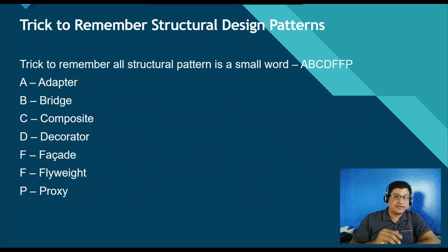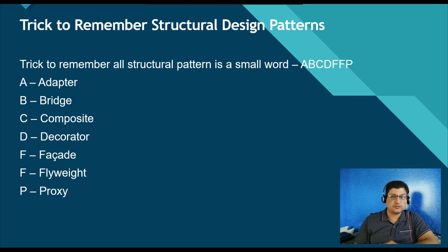The trick to remember all structural patterns is this small word: A, B, C, D, F, F, P. This word is very easy to remember and using it you can recall all the structural design patterns. A for adapter, B for bridge, C for composite, D for decorator, F for facade, F for flyweight, and P for proxy. Is it easy to remember structural design patterns now?